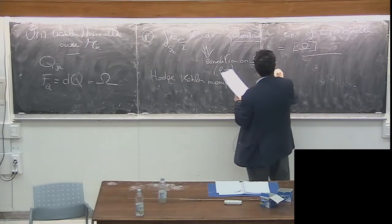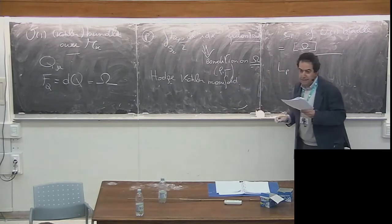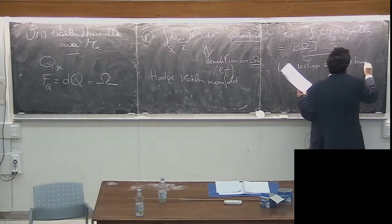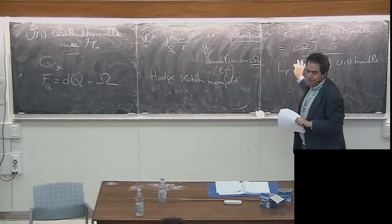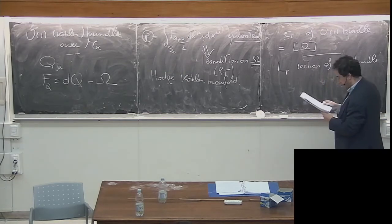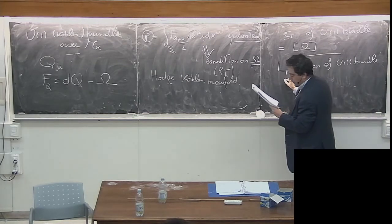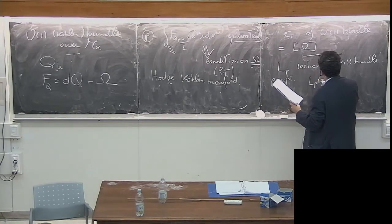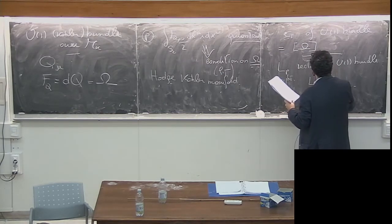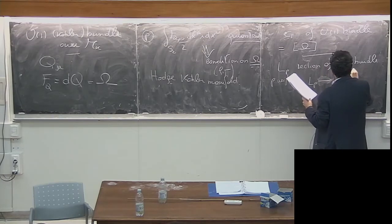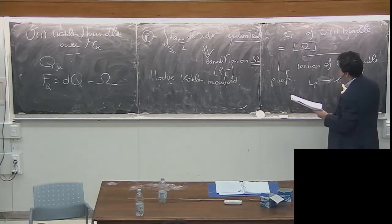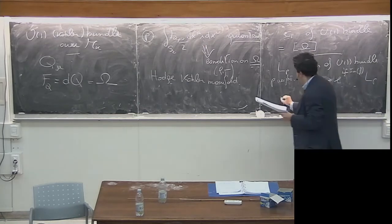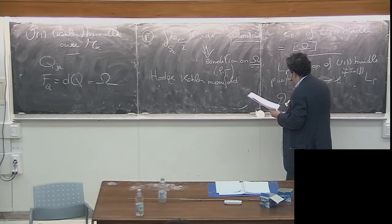We can define sections of the U(1) bundle L_P. A section of the U(1) bundle of weight P is a quantity L(z, z bar) that transforms as e^{iP/2 Im(f)} under a Kähler transformation. We define a covariant derivative on L_P with a hat as: D-hat_i L_P = D_i L_P + (i/2) P Q_i L_P. This is the definition of the covariant derivative on a section of the U(1) bundle.